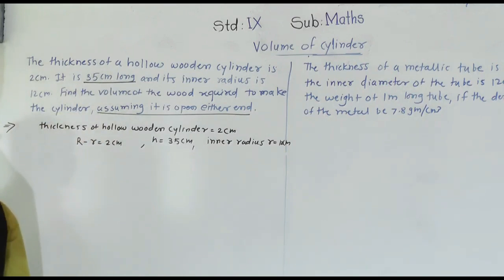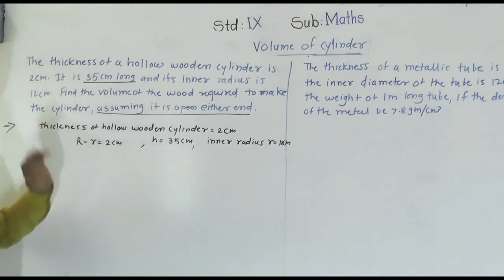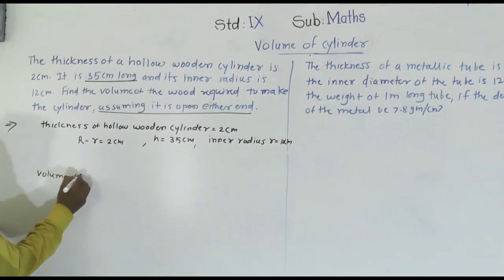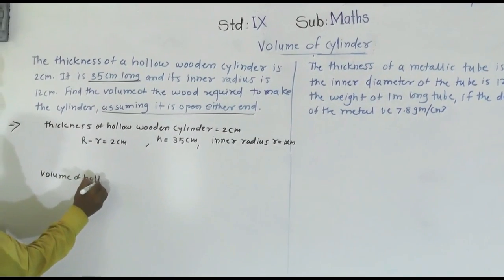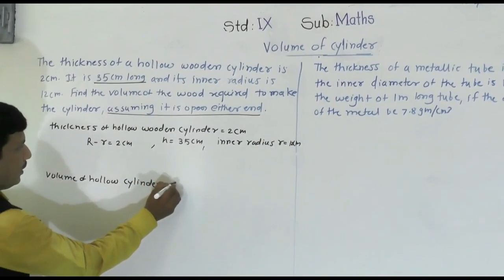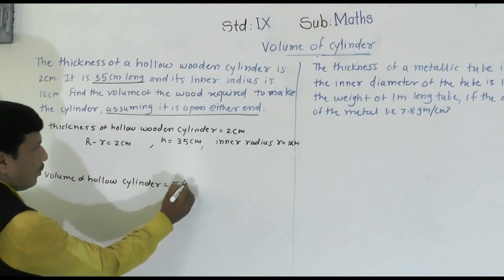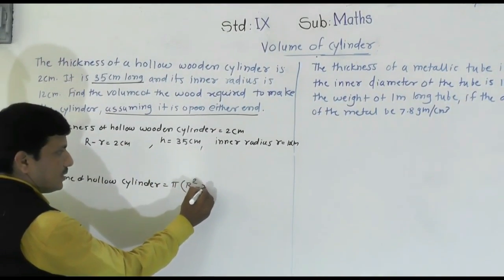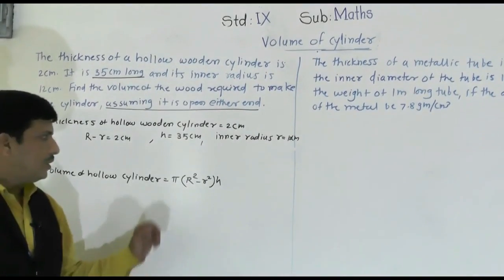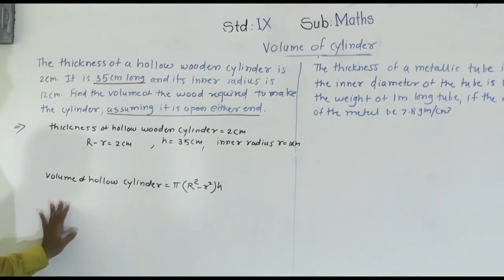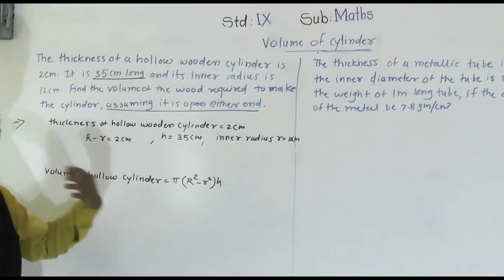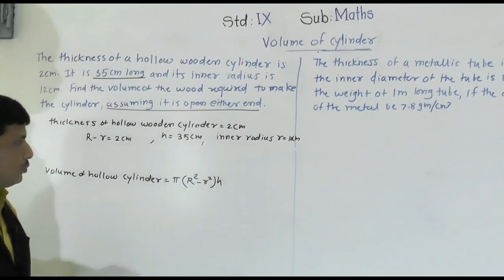How do we find the volume of a hollow cylinder? The volume of a hollow cylinder equals π(R² − r²) × h. We are going to use this formula, but first we need to check whether all the values are given or if we need to find out some unknown values.